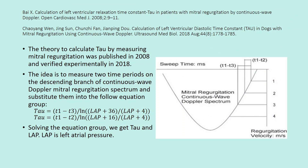The theory to calculate tau by measuring mitral regurgitation was published in 2008 and verified experimentally in 2018. The idea is to measure two time periods on the descending branch of the continuous wave Doppler mitral regurgitation spectrum and substitute them into the following equation group.